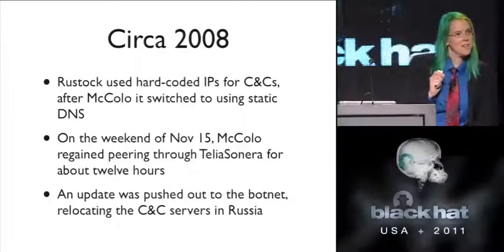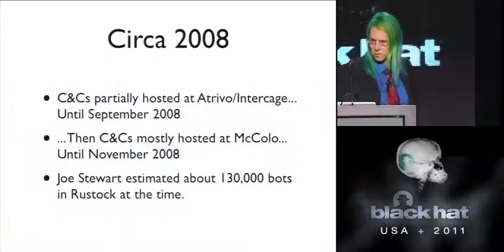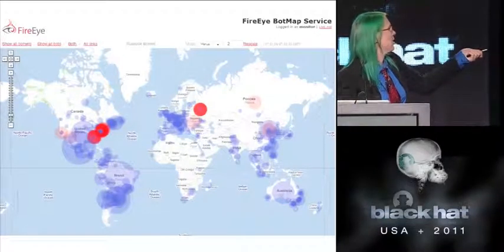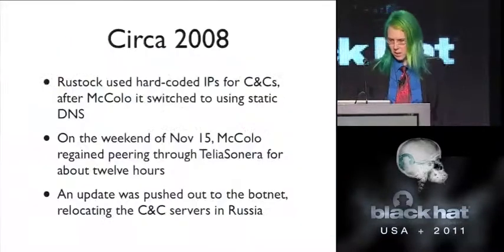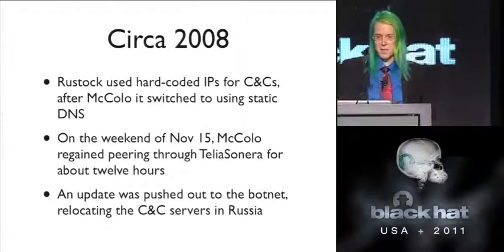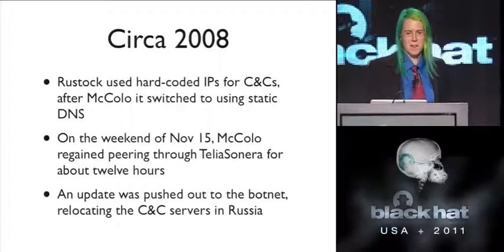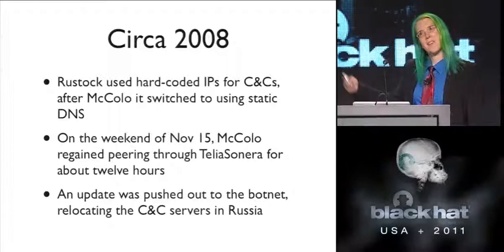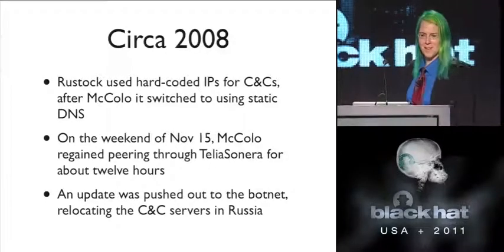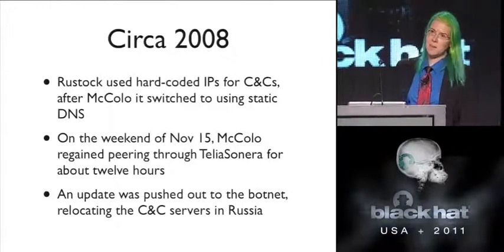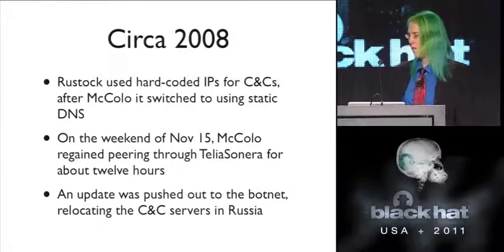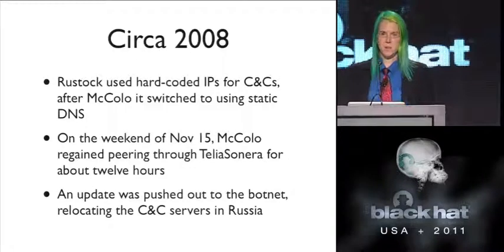Most of the hosting was in San Jose at the time — Rustock was using hard-coded IPs. Some versions did have backup DNS names, but a bunch didn't. However, on Saturday after the initial takedown, McColo apparently made use of their backup peer agreement with Telia in Sweden, and for about 12 hours the IP block was routable again. The people operating Rustock took the opportunity to quickly push out an update to all the bots that still connected to the IP range to point them to a new server in Russia.